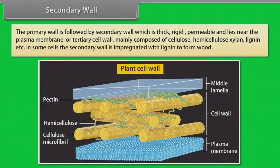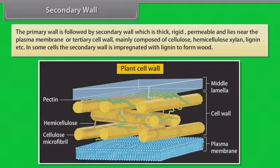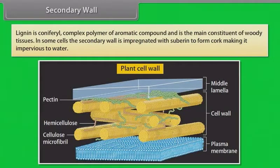Secondary wall. The primary wall is followed by the secondary wall, which is thick, rigid, permeable and lies near the plasma membrane. It is mainly composed of cellulose, hemicellulose, xylem, and lignin. In some cells, the secondary wall is impregnated with lignin to form wood. Lignin is a complex polymer of aromatic compounds and is the main constituent of woody tissues. In some cells, the secondary wall is impregnated with suberin to form cork, making it impervious to water.